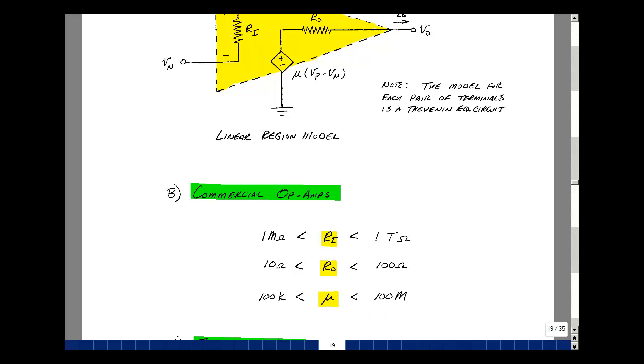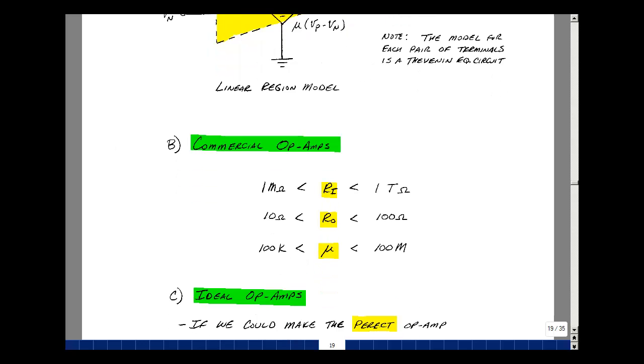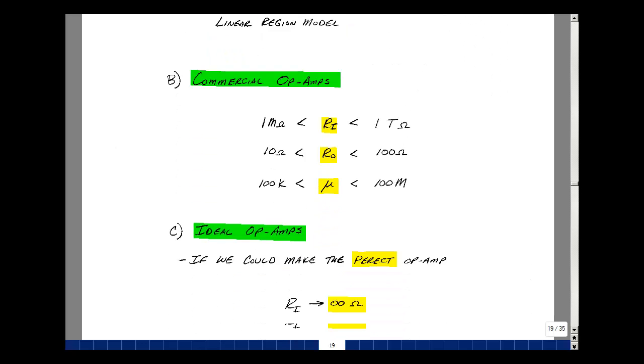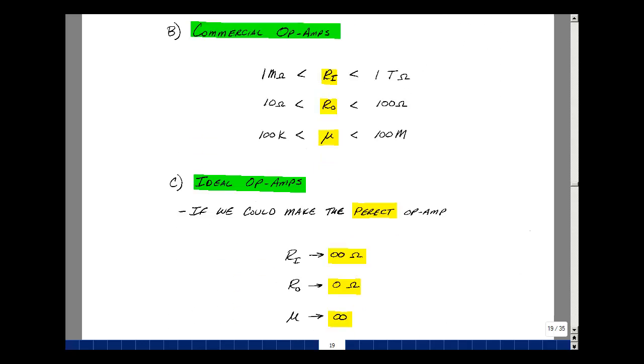Now, if you look at these numbers long enough, you can start to ask yourself a question: if you have the perfect op-amp, where are these numbers heading towards? The input resistance is really very large, and in the limit, if it were perfect, it would be infinite. The output resistance is low, and in the limit, it would be zero if it were perfect. But lastly, the gain mu, if it's as large as this, we could say it's tending towards infinity.